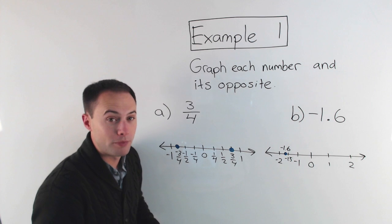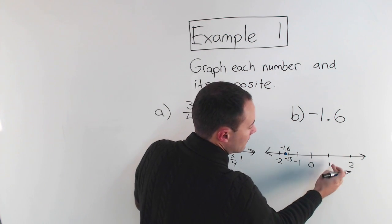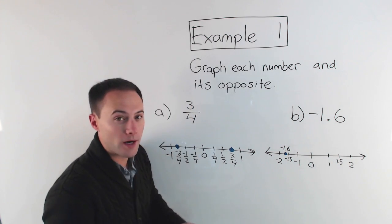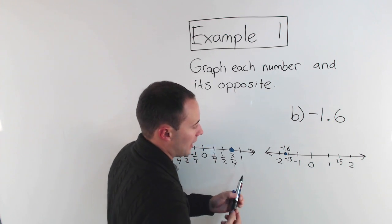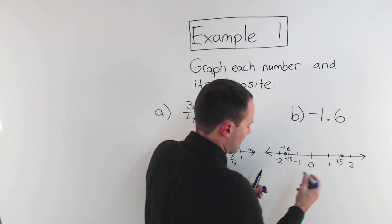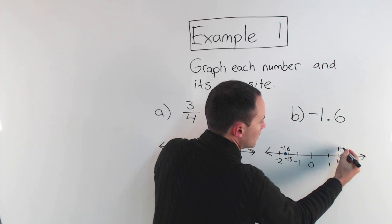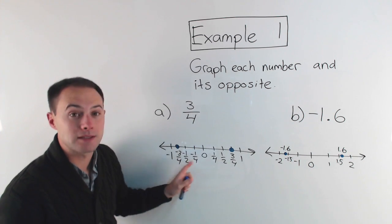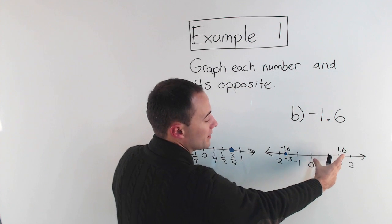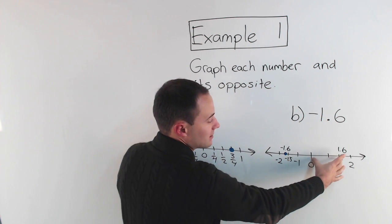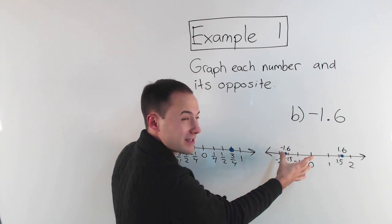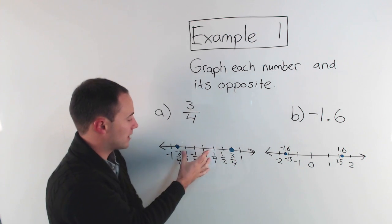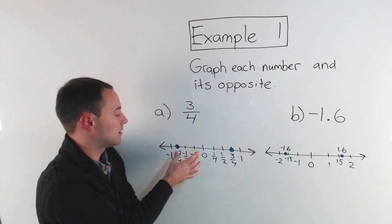The opposite of negative one-point-six would be positive one-point-six. Halfway between one and two would be one-point-five, so it's going to be a little more to the right than one-point-five. I'll put that point just on the other side there — positive one-point-six. Notice they're both the same distance away from zero. Positive one-point-six is one-point-six away from zero, and negative one-point-six is also one-point-six away, just in the negative direction. Same with three-fourths: from zero to three-fourths and from zero to negative three-fourths, the distance is also three-fourths.